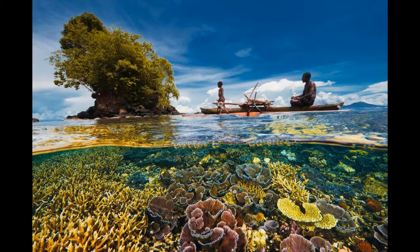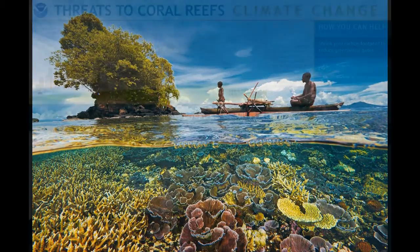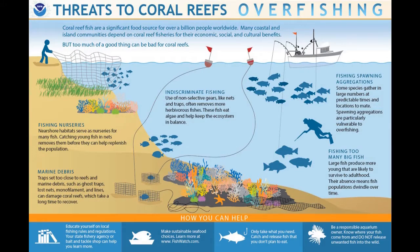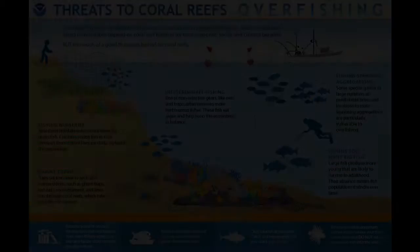Coral reefs are a part of the topography. Part of the disturbance regime includes warming water, ocean acidification, overfishing, pollution, predatory starfish, invasive species, and sedimentation.